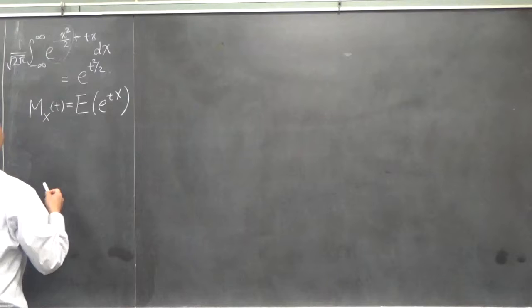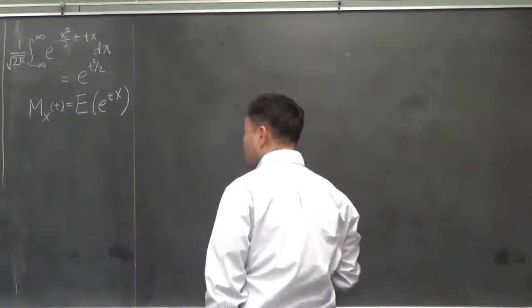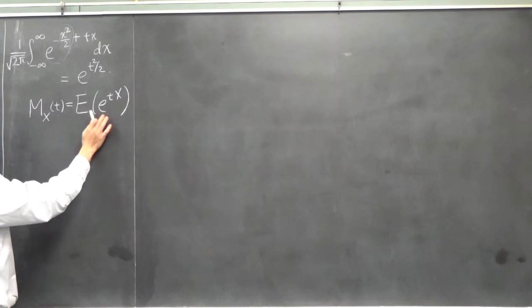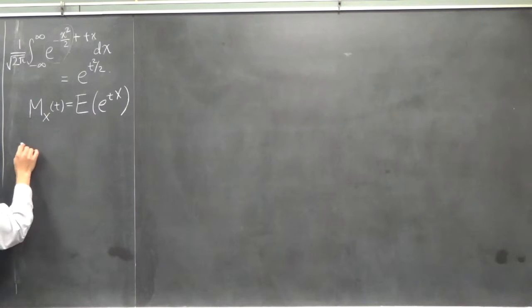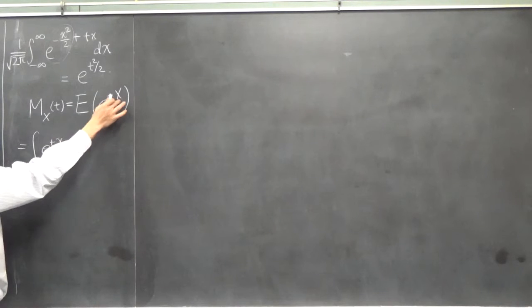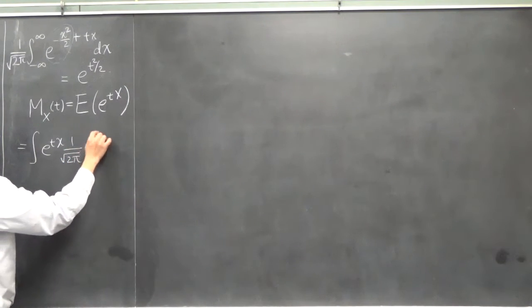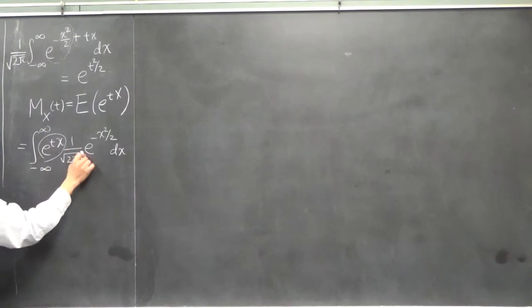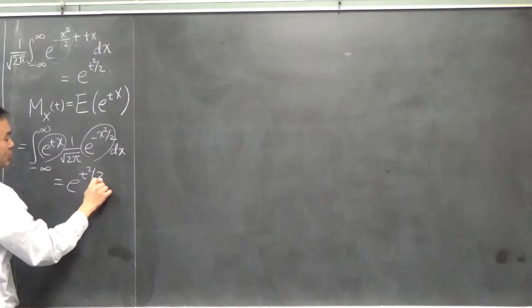Now what I didn't mention that time was that this really is the moment-generating function of the normal distribution, standard normal distribution, because the moment-generating function, defined as the expectation value of e to the tx, is that you take e to the tx, replace this capital X by small x, and then you stick in the probability density function. And if you use the fact that these two multiplications make the exponents add up, and then you pull this out, you get exactly this one. So we know that the moment-generating function is this.